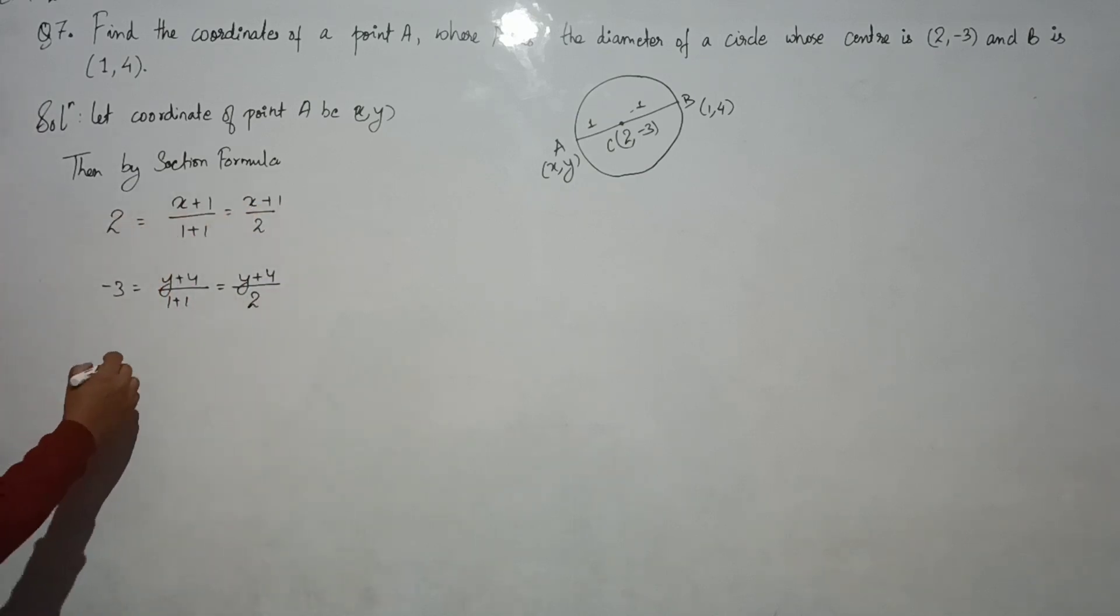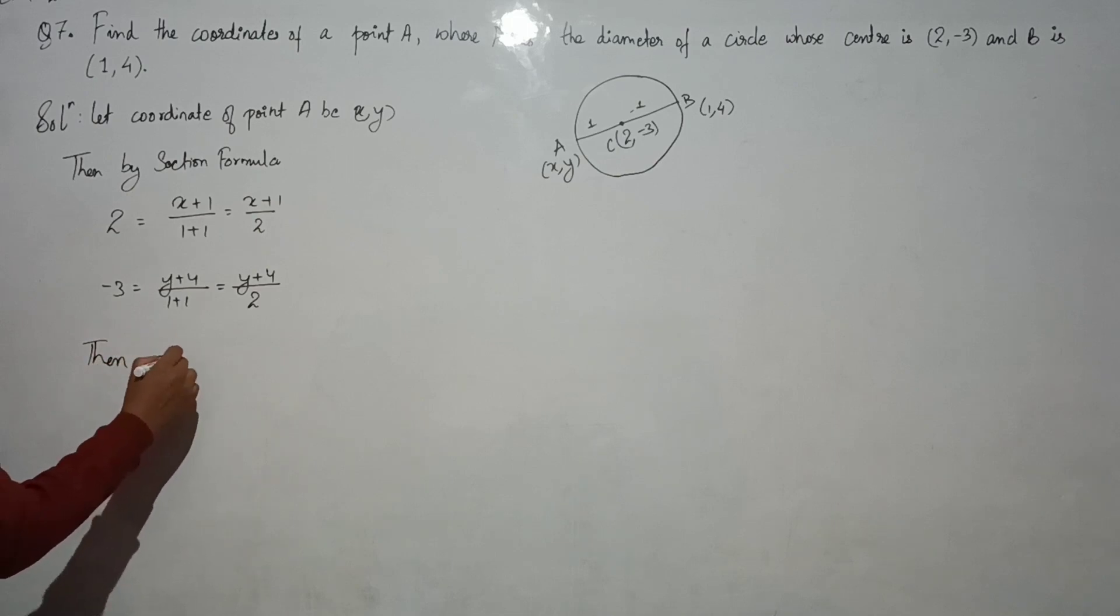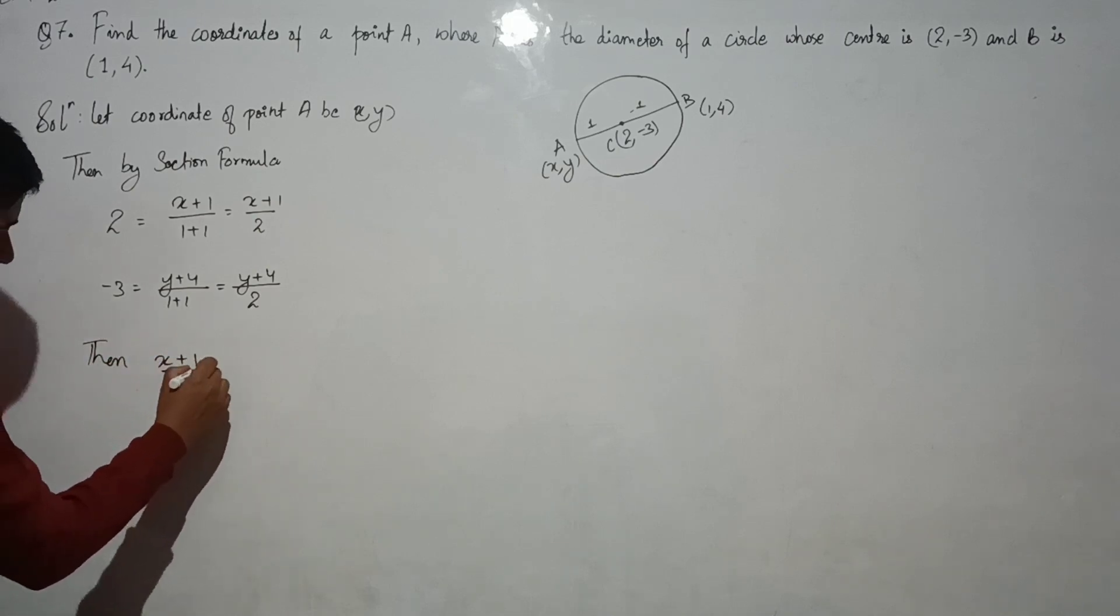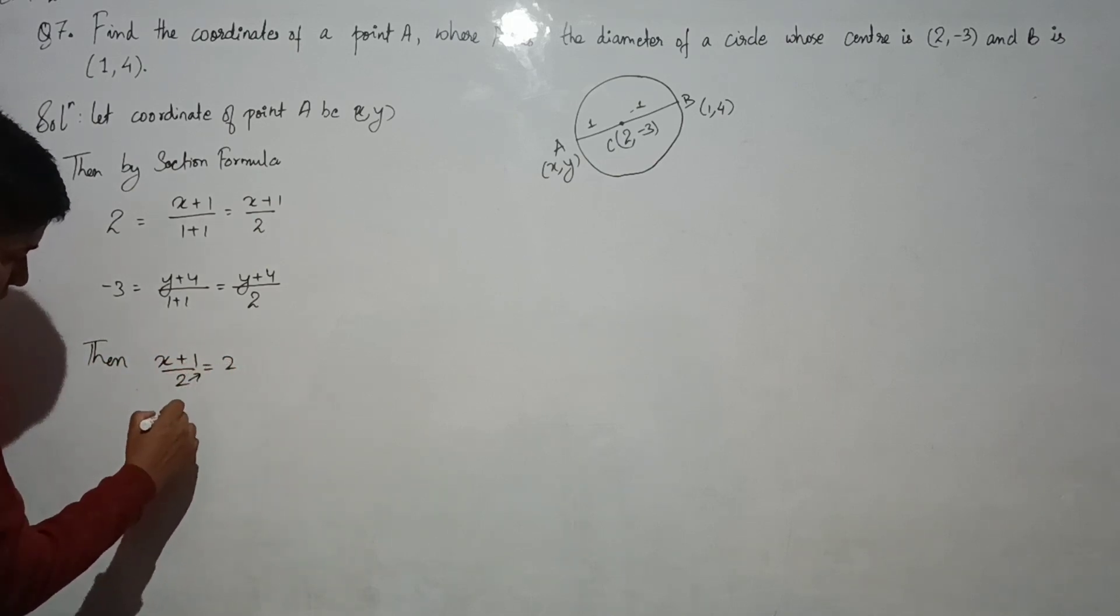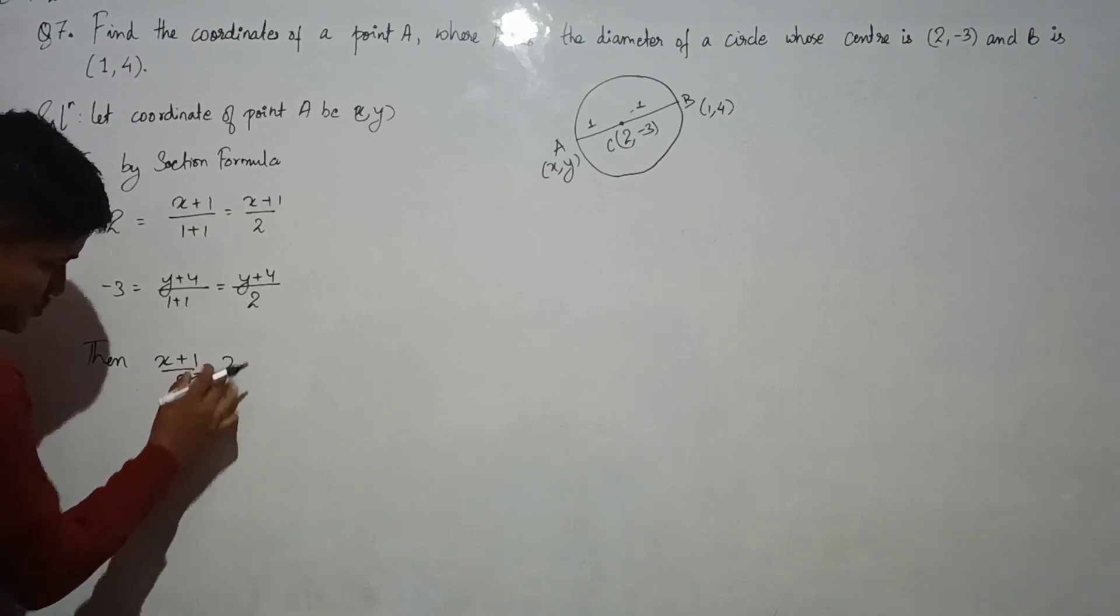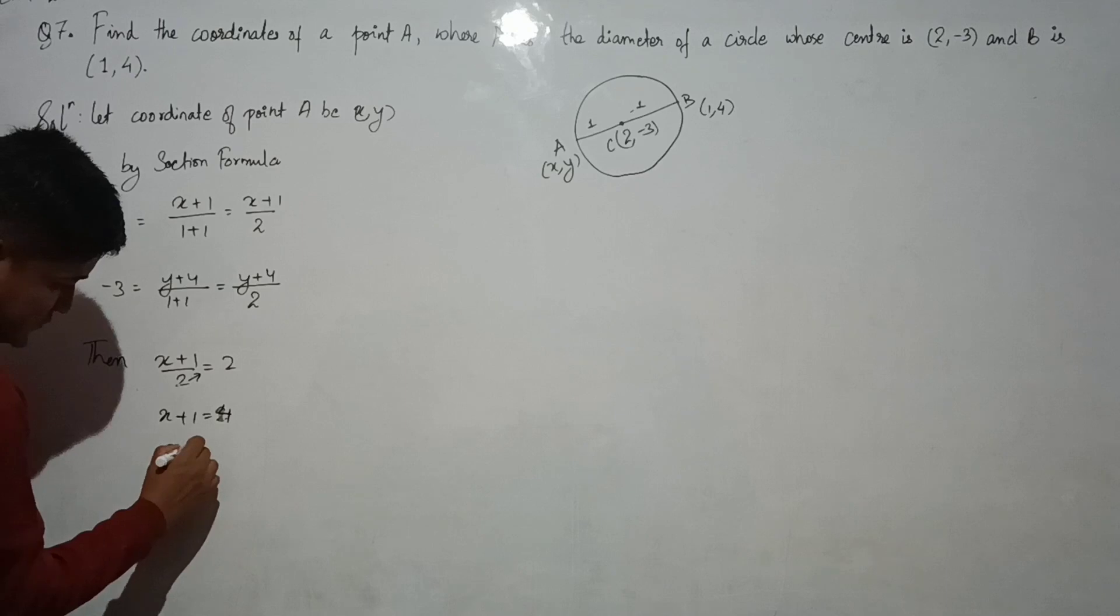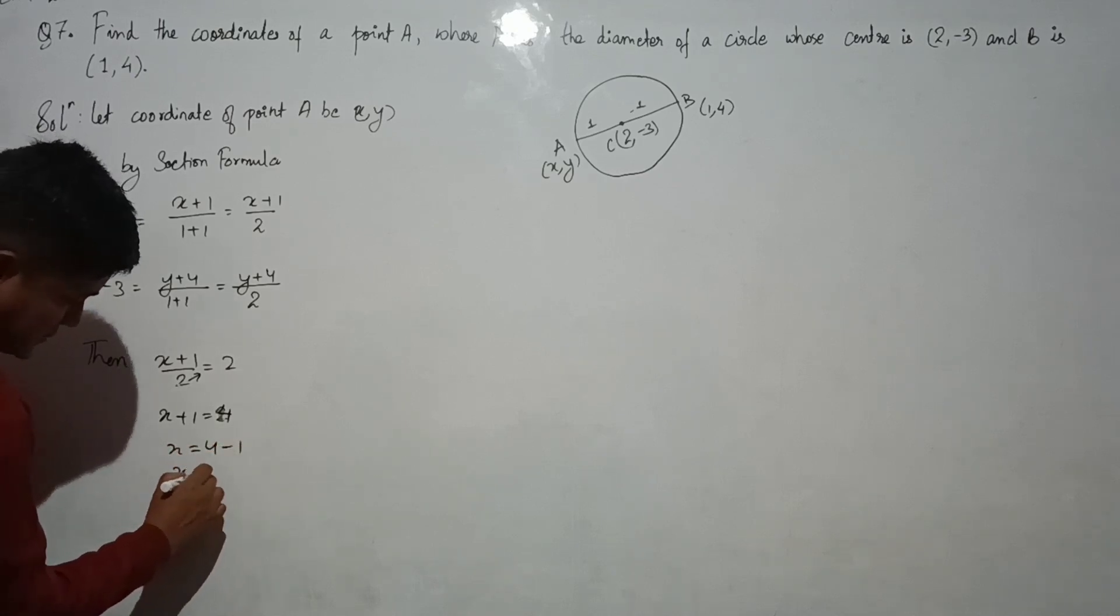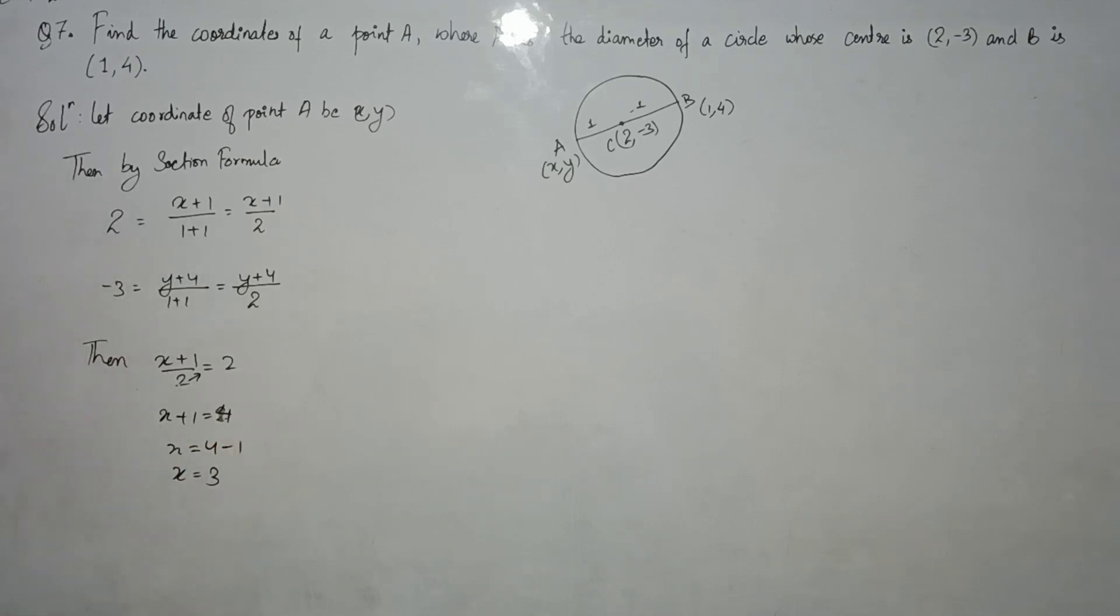2 equals to 2. Then solving, X plus 1 by 2 equals to 2. 2 will go to the other side. X plus 1 equals to 4. X equals to 4 minus 1. X equals to 3.